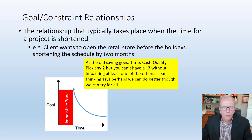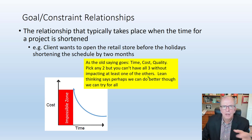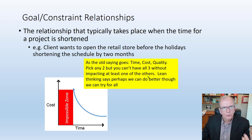There's this old saying: time, cost, quality — pick any two, but you can't have all three without impacting at least one of the others. This is traditional thinking when we think about time, cost, quality. What I want to propose today, and what the lean community largely says about this, is that perhaps we can try for all three. Let's try for all three, and that involves a lot of things.